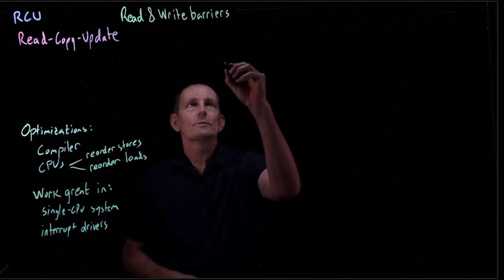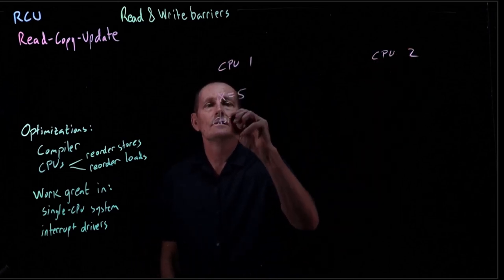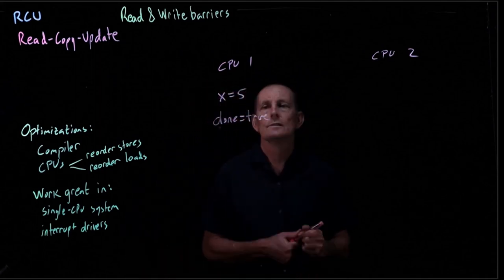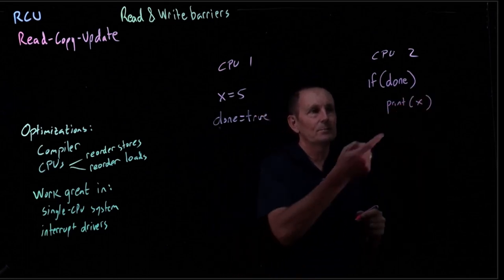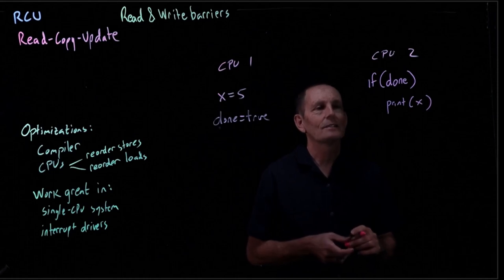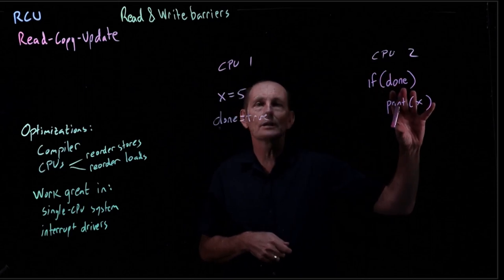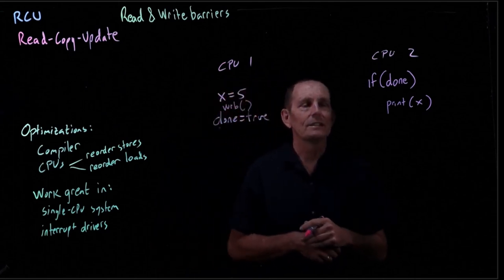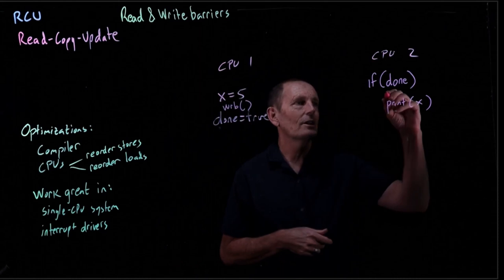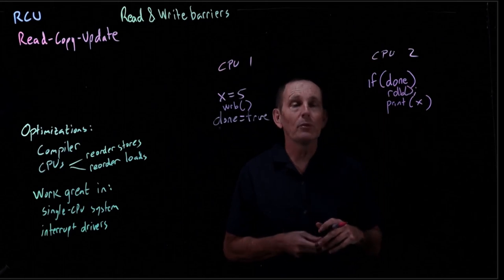So let's look at some examples where this begins to be a problem. So let's see if you want to something like this, x equals 5, done equals true. And CPU 2 says if done, print x. You would expect x is going to be 5, but that's not necessarily the case, it might be its old value. And that's due to the lack of both the write barrier here and a read barrier here. So if we wanted to actually make this work, we would do a write barrier, so that might be, for instance, some C routine that emits a write barrier instruction, and a read barrier. Both of those would be needed.